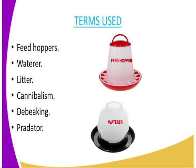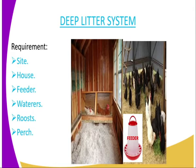The deep litter system requirements include: a site, house, feeder, waterer, roost, and perch.